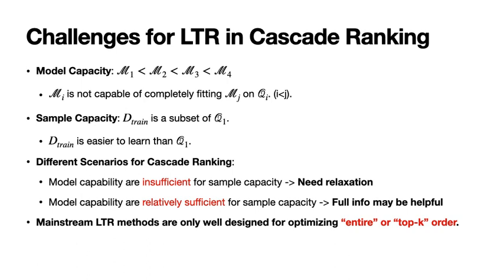Sometimes we may face another opposite situation where the data is simple enough, since the drawn samples may be in a very small amount. At this time, full information may be helpful. Thus, it is a new challenge for LTR methods to deal with these different scenarios in cascade ranking. Another challenge is that mainstream LTR methods are often designed for optimizing the entire or top K order, corresponding to NDCG and NDCG at K. Thus, they may be lacking in optimizing some relaxed targets.